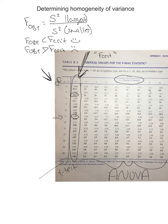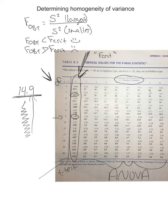Think of the F-crit as a ceiling — 14.9 is the ceiling. Your F-obtained can be anything below that; it just can't blow past 14.9. So as long as your F-obtained is 14, 13, or something like 2, you can proceed. You haven't violated the assumption of homogeneity of variance. But if your F-obtained is something like 23, you have to stop. You can't proceed or use that statistical analysis.